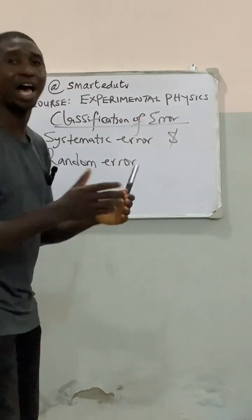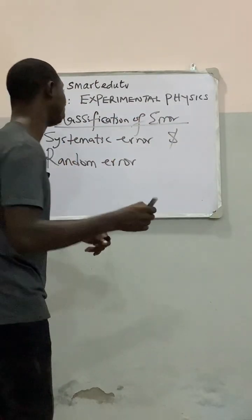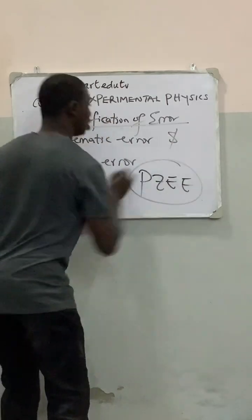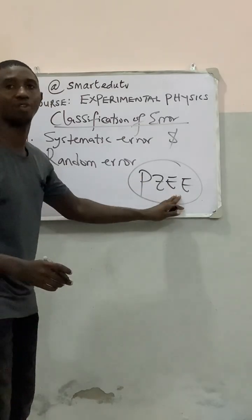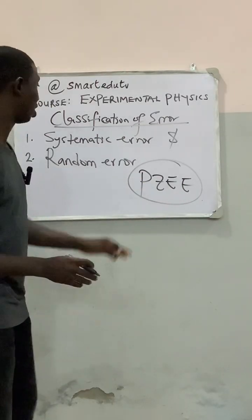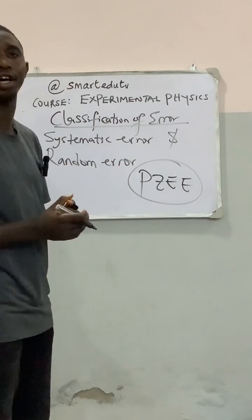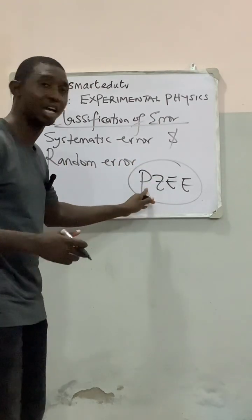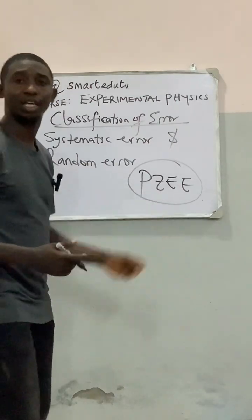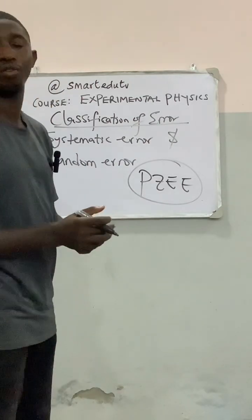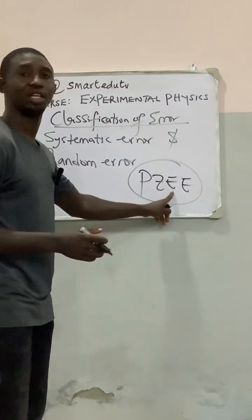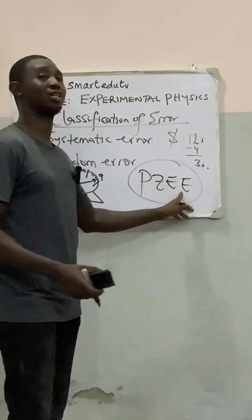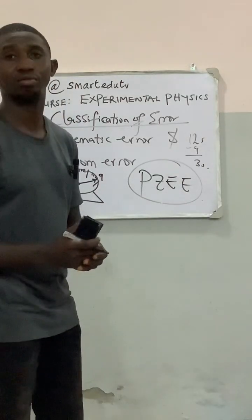Those errors we are talking about, they can come from different sources. And those sources are collectively called PZEE. These are the sources of systematic error. The P stands for personal error from the observer. The Z, it can be from zero error. The E, it can be error due to wrong assumptions. And the last E is the error due to instrument.